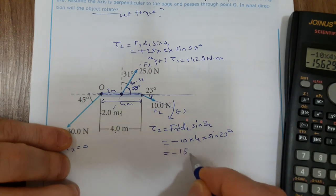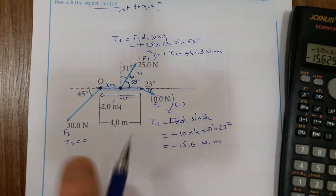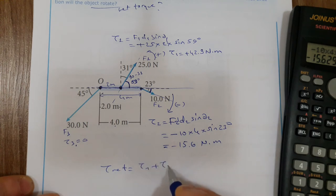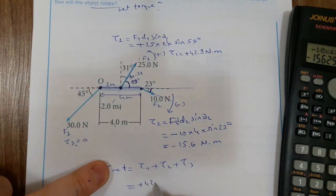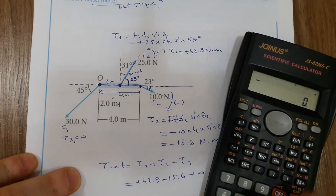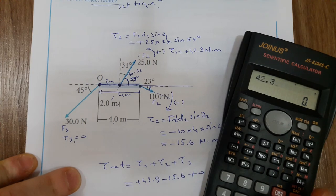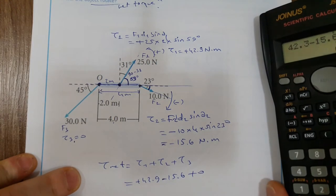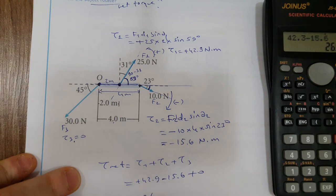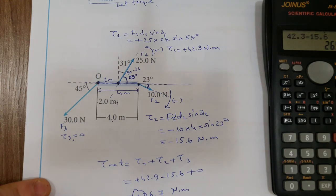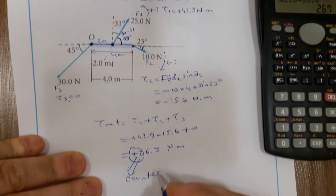Torque 3 = 0. Net torque = torque 1 + torque 2 + torque 3 = 42.9 + (negative 15.6) + 0 = positive 26.7 Newton·meter. Because it's positive, the rotation is counterclockwise.